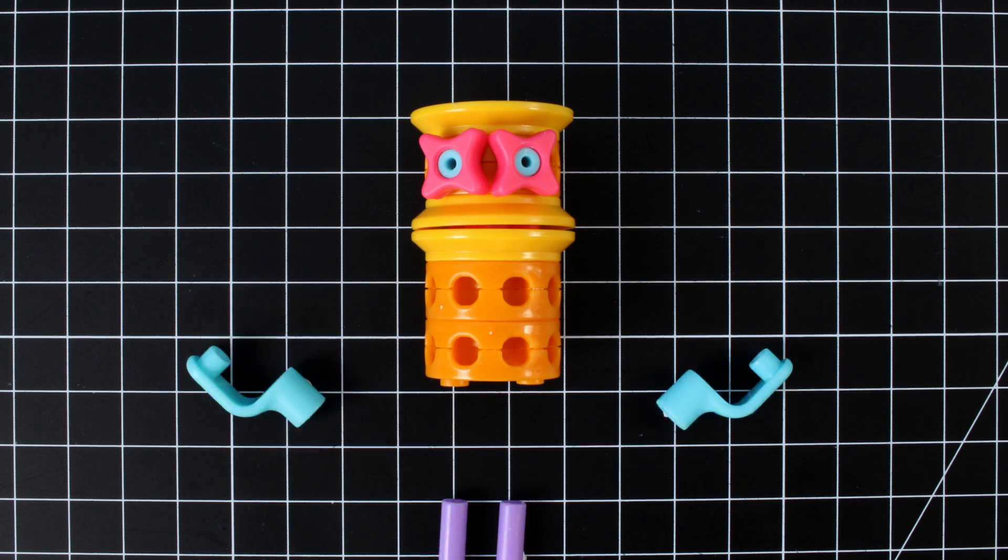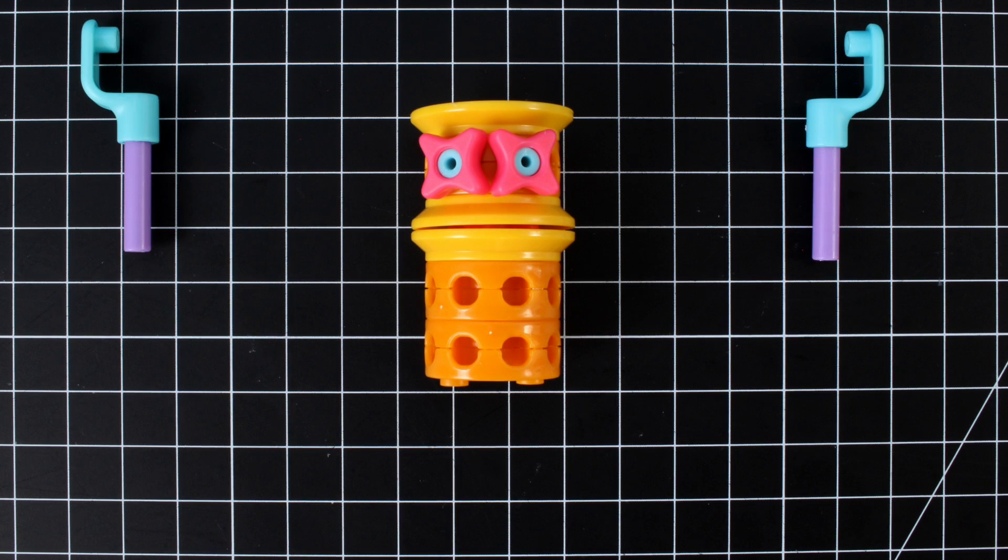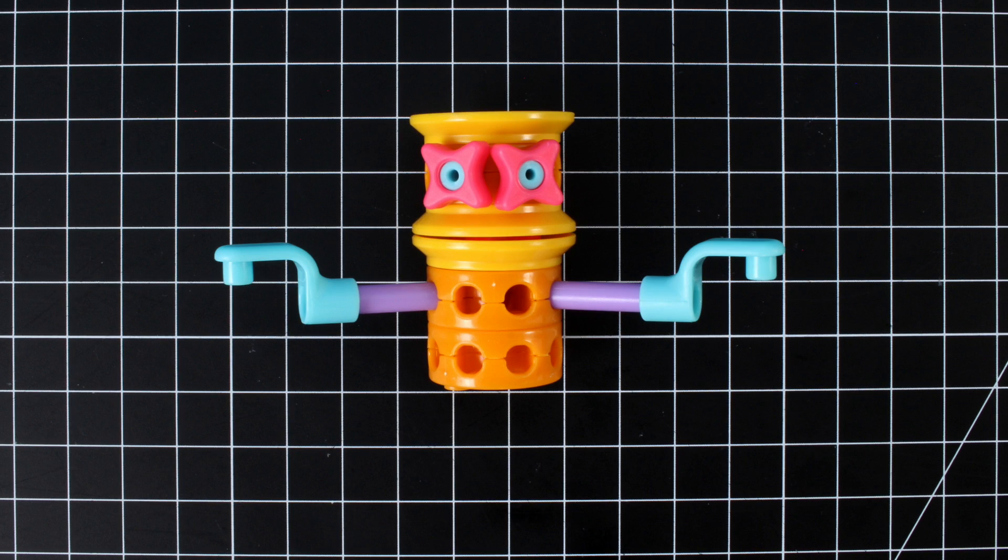Make arms with mini axles and angle joints. Add the arms to the body in the holes with a snug fit. Make sure they're spaced two holes apart.